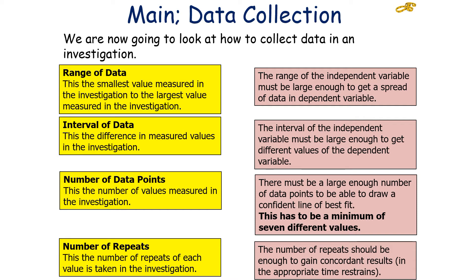To clarify, as the investigator you must decide: the range of data (smallest to largest value, large enough to spread data in the dependent variable); the interval of data (difference between measured values, large enough to get different values of the dependent variable); the number of data points (minimum of seven to draw a confident line of best fit); and the number of repeats (enough to gain concordant results within appropriate time constraints).